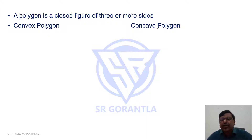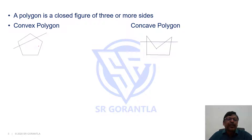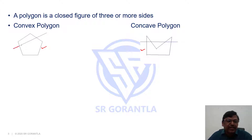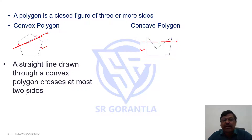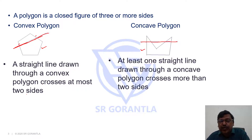If you look at this example, this is a convex polygon. This is a concave polygon, and I have drawn a line intersecting this polygon. If you observe, a straight line drawn through a convex polygon crosses at most two sides — it will cross a maximum of two sides. Whereas in a concave polygon, at least one straight line drawn through it crosses more than two sides. You can see here it is crossing one, two, three, four sides.